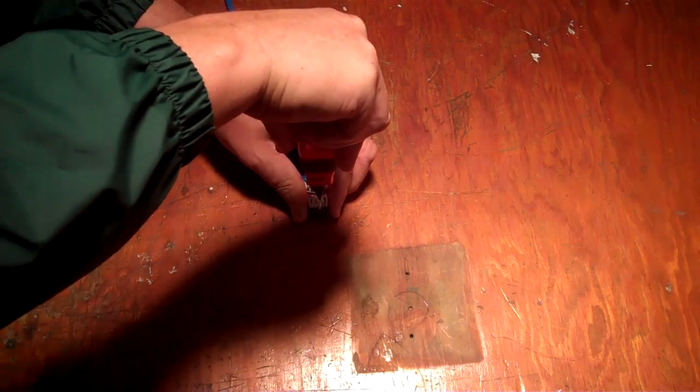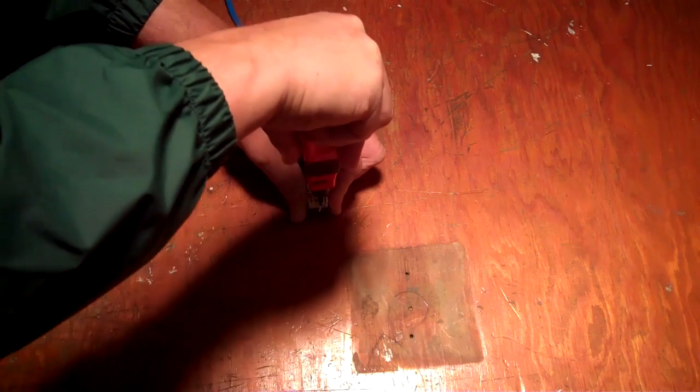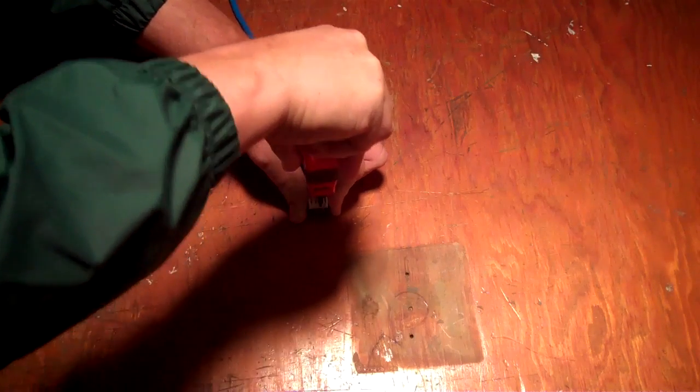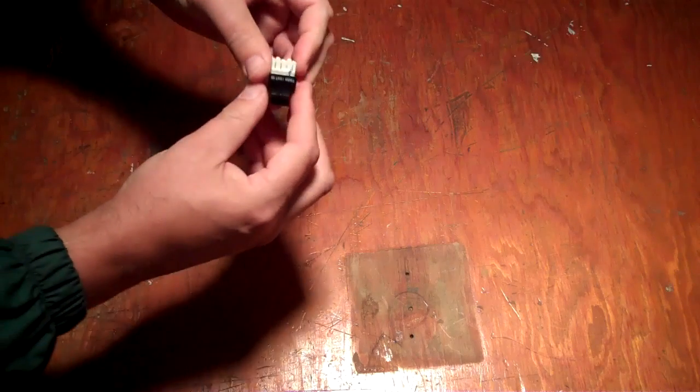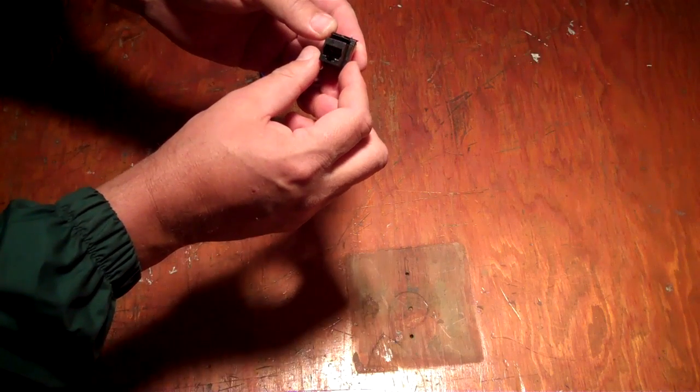Gently pull it out. And now we're going to do the blue-white wire. Again, listen for the click. And there we go. And that is all that is necessary to install a phone jack.